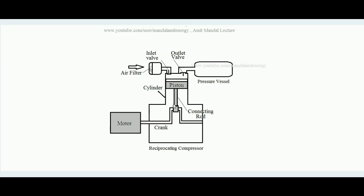This is the schematic diagram of a reciprocating compressor. It consists of a cylinder and a piston that reciprocates inside the cylinder. It has two valves: the inlet valve and the outlet valve — these are non-return valves that can open on one side only. There is a crankcase and a crank driven by a motor, so rotary power is provided by the motor to the crank, and this rotary motion is converted into the reciprocating motion of the piston.